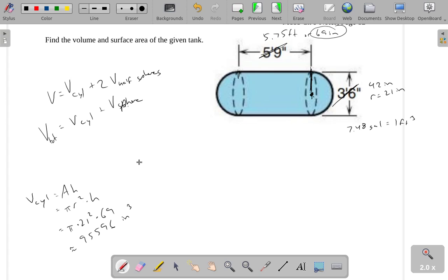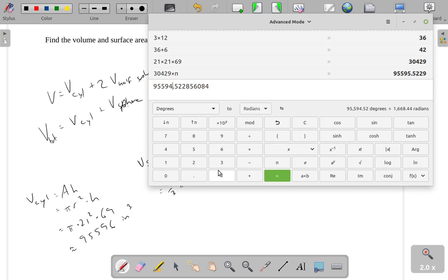The volume of the sphere is going to be 4 thirds pi r cubed. So r, again, is 21. So 4 thirds times pi times 21 cubed. 4 times 4 divided by 3 times pi times 21 cubed. Which gives me 38,792.